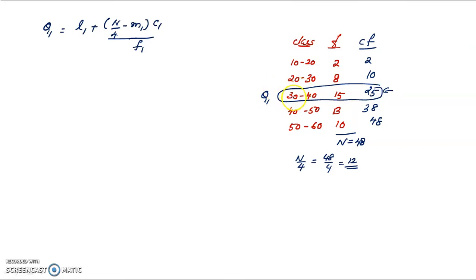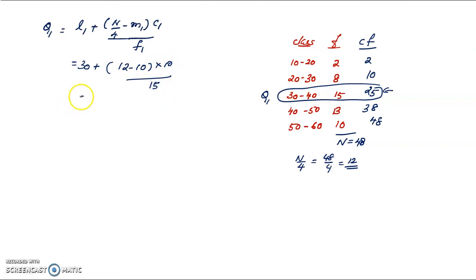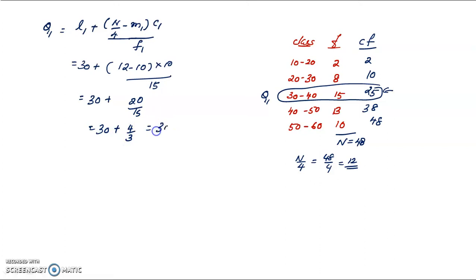In the formula, Q1 class lower limit L1 is 30. N by 4 is 12, minus M1. M1 is the cumulative frequency up to the previous class, which is 10. C1, the class interval, is 10. Frequency F1 is 15. Calculating: 30 plus 2 into 10 divided by 15, that is 30 plus 1.33, so Q1 equals 31.33.